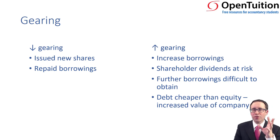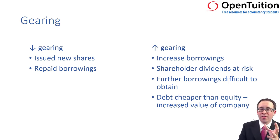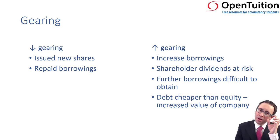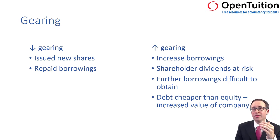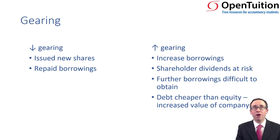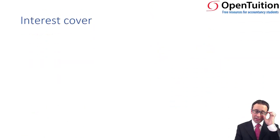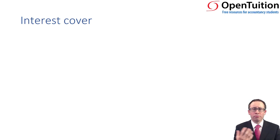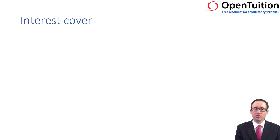So an increase in gearing — in financial reporting, it's mostly viewed as bad news. But in financial management, an increase in gearing can be good news provided that the debt and the gearing are still at low levels. Gearing looks at solvency from a statement of financial position perspective, but we can also link it into a performance and profitability perspective by looking at interest cover.